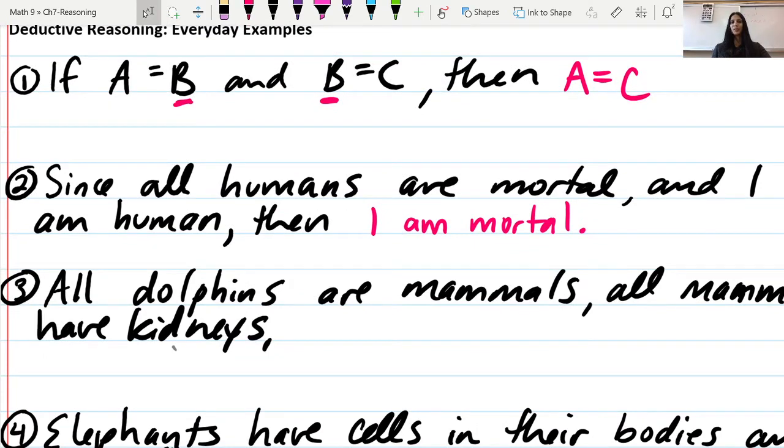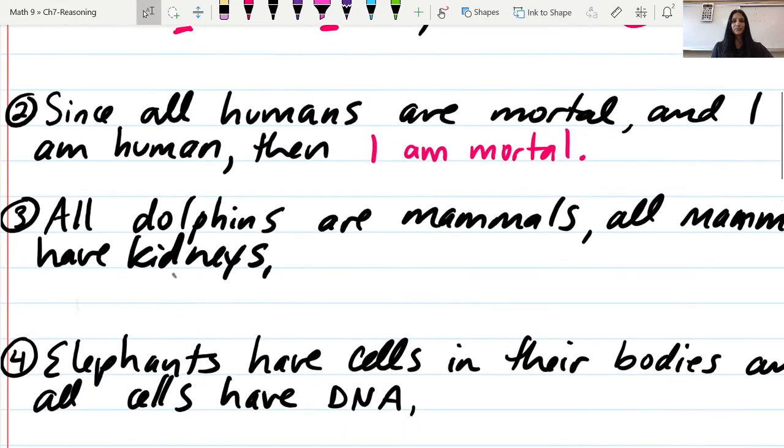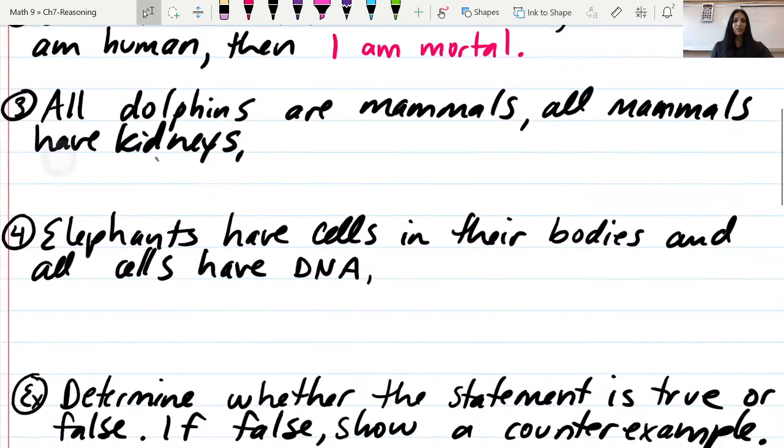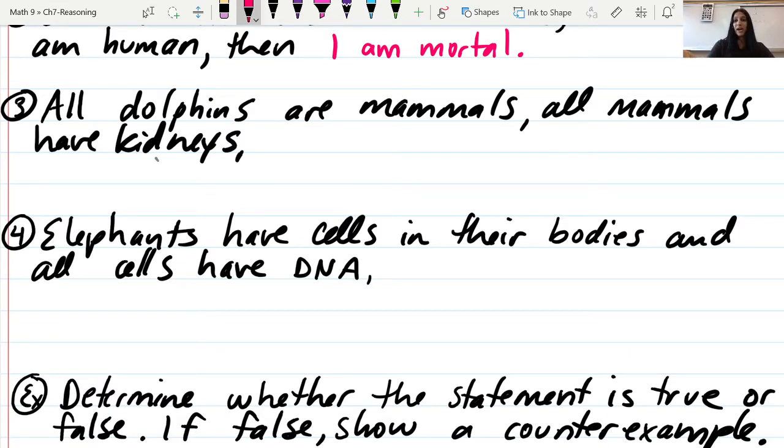In the last one, we used equations and variables. The rest will use sentences so you can understand the concept and apply it later. Number three: All dolphins are mammals. All mammals have kidneys. So what can we say? If all dolphins are mammals and all mammals have kidneys, then all dolphins have kidneys.